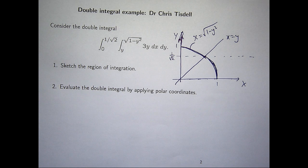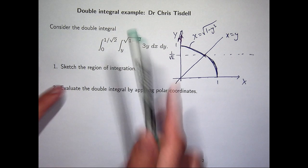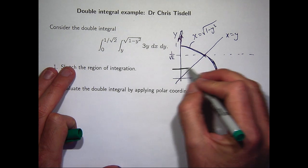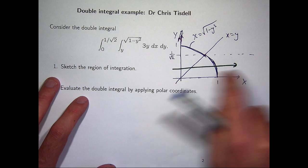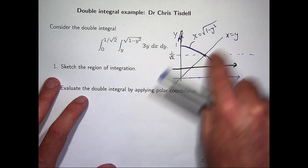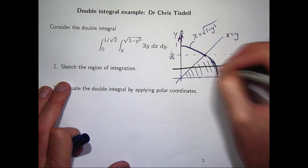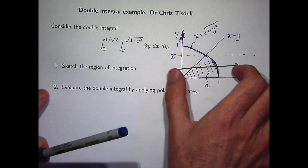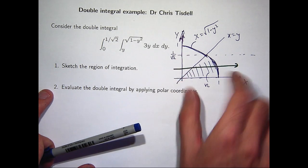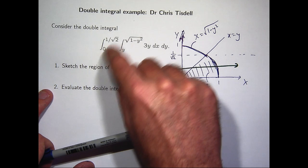We want to determine the region of integration. y is between the two horizontal lines, and x is greater than y but less than root 1 minus y squared. Drawing a horizontal line, since x is between two functions, this horizontal line enters the region at x equals y and leaves at x equals root 1 minus y squared. So this shaded area is our region of integration. Moving up and down the y-axis traces the whole region, so y goes from 0 to 1 on root 2.